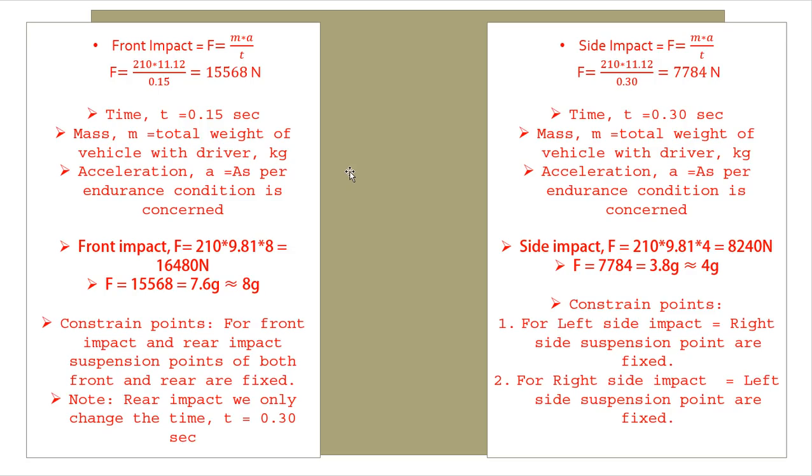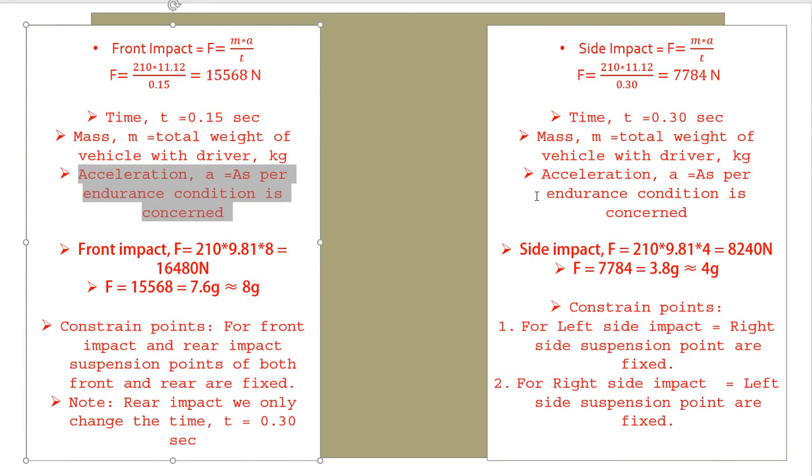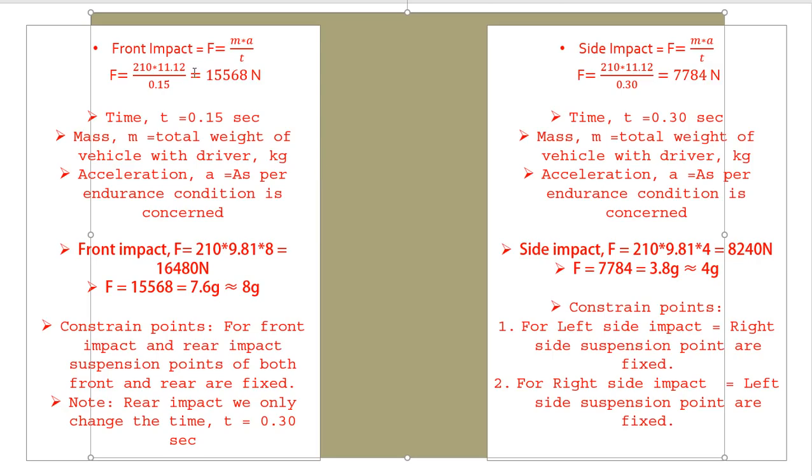If you look at previous year's endurance clips, you'll understand there are lots of hurdles and hundreds of vehicles in that track. I don't think vehicle will run at 60 km per hour because there are constant hurdles. Vehicle general speed during endurance is around 40 to 45 km per hour, so as per that we have considered the acceleration of 11.12.